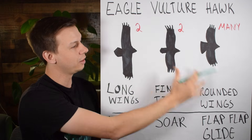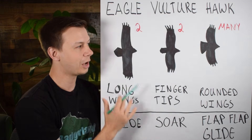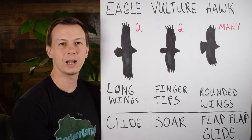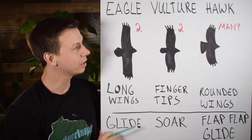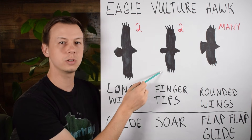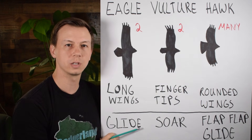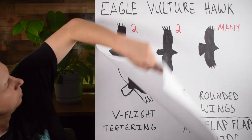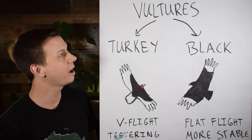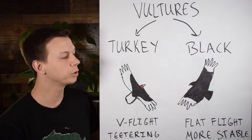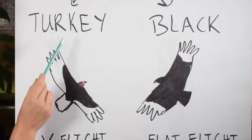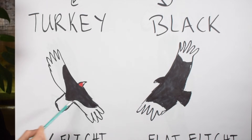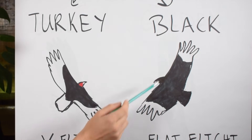That covers how you can differentiate these three birds by silhouette and other factors. Now let's look at the vultures a little more closely. Here we have the two vultures you're most likely to encounter in the United States: the turkey vulture and the black vulture.